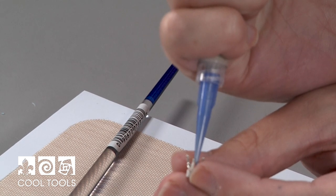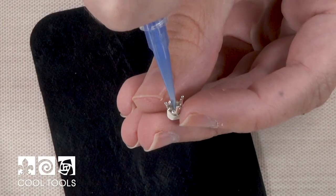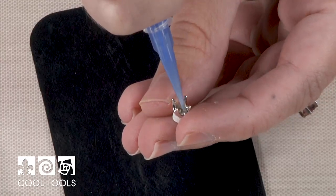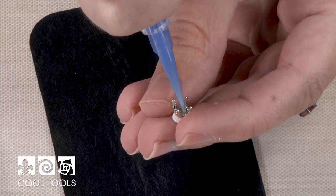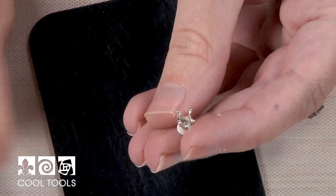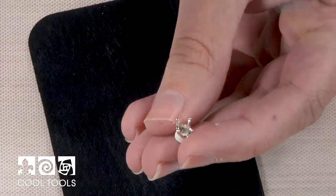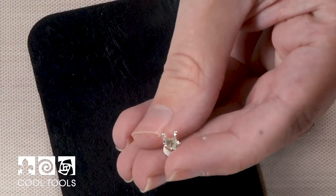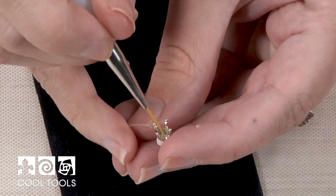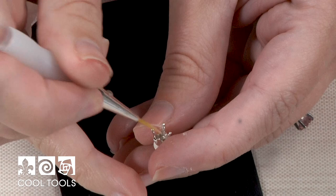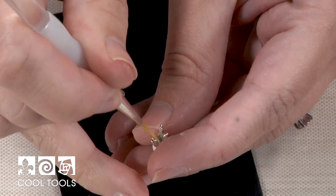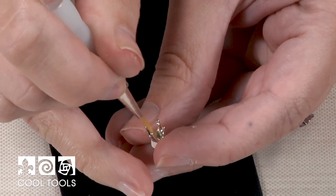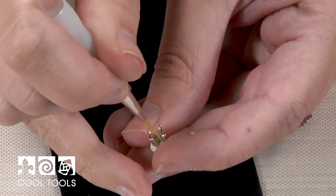So just a teeny tiny dab will do this. And then I'm just going to use my damp brush again to kind of smooth it out. And this is just, like I said, I'm being kind of finicky, but I want it to look nice and clean.